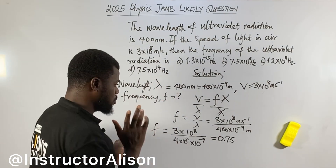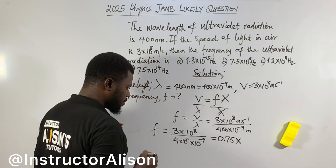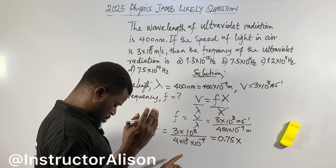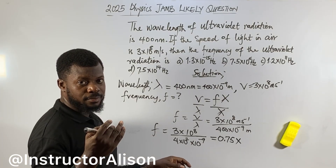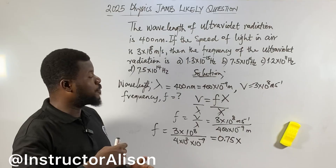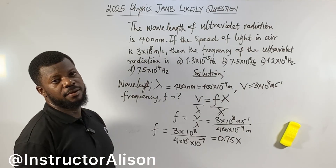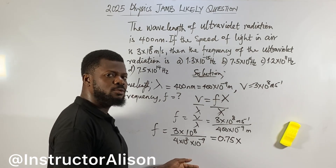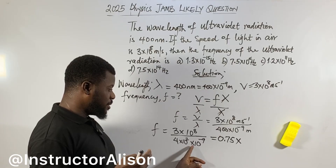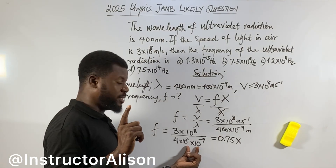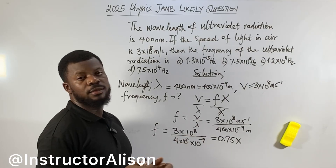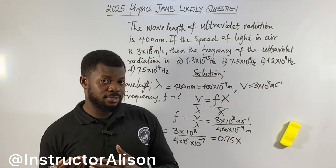Now for the denominator — you know the product law of indices, also called multiplication law of indices. For the product law: when the bases are the same, you always take one of the common bases. So I will take one common base which will be 10, and then add the powers. Two plus minus nine — plus minus is minus — so 2 minus 9 gives minus 7. So you get 10 to the power of minus 7.